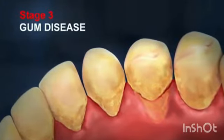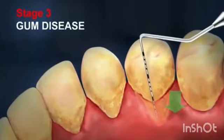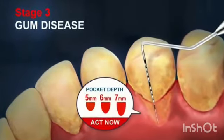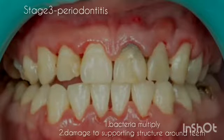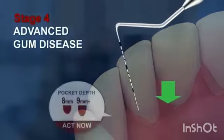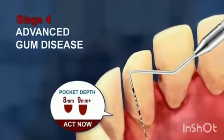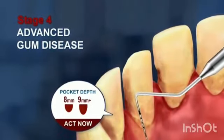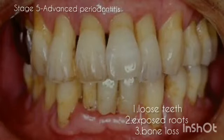If gingivitis is untreated, it leads to stage three gum disease, where the pocket depth is about 6 to 7 millimeters. Here the bacteria multiply to a greater extent, causing damage to the supporting tooth structures around the teeth. The fourth stage is advanced gum disease, which shows a pocket depth of more than 9 millimeters, with loose teeth.